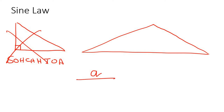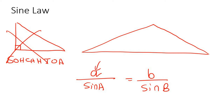The sine rule says a over sin A equals to b over sin B. Now let me quickly explain. So the a and the b, those are the sides, and then the capital A and the capital B, those are the angles.